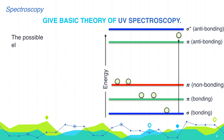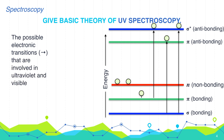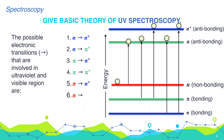The possible electronic transitions involved in the ultraviolet and visible region are: sigma to sigma star (σ→σ*), sigma to pi star (σ→π*), pi to sigma star (π→σ*), pi to pi star (π→π*), n to sigma star (n→σ*), and n to pi star (n→π*).